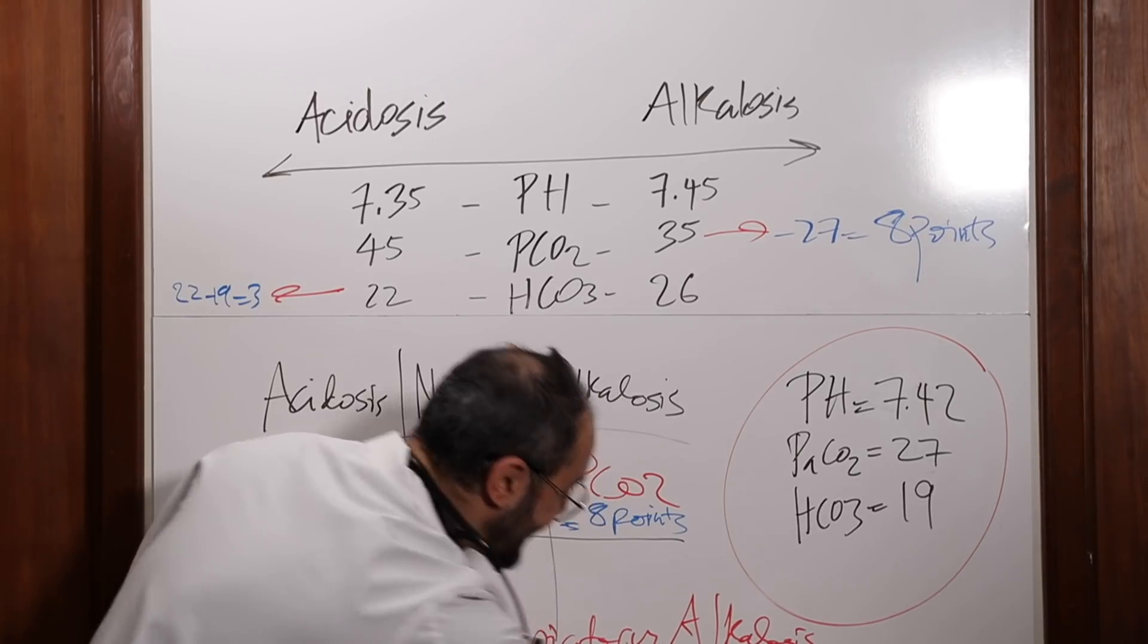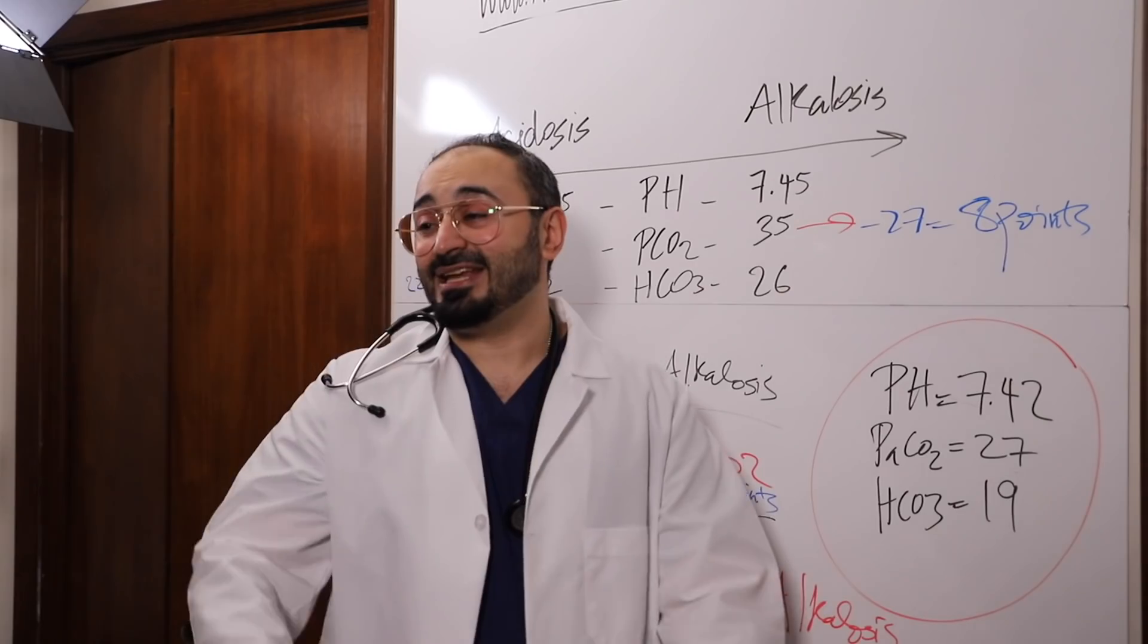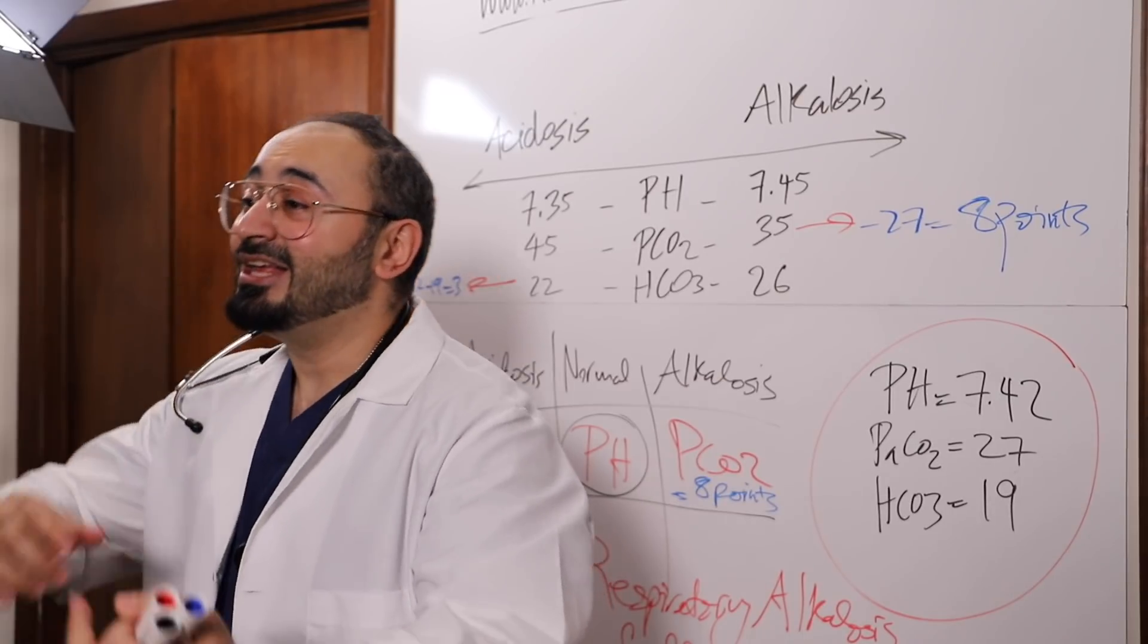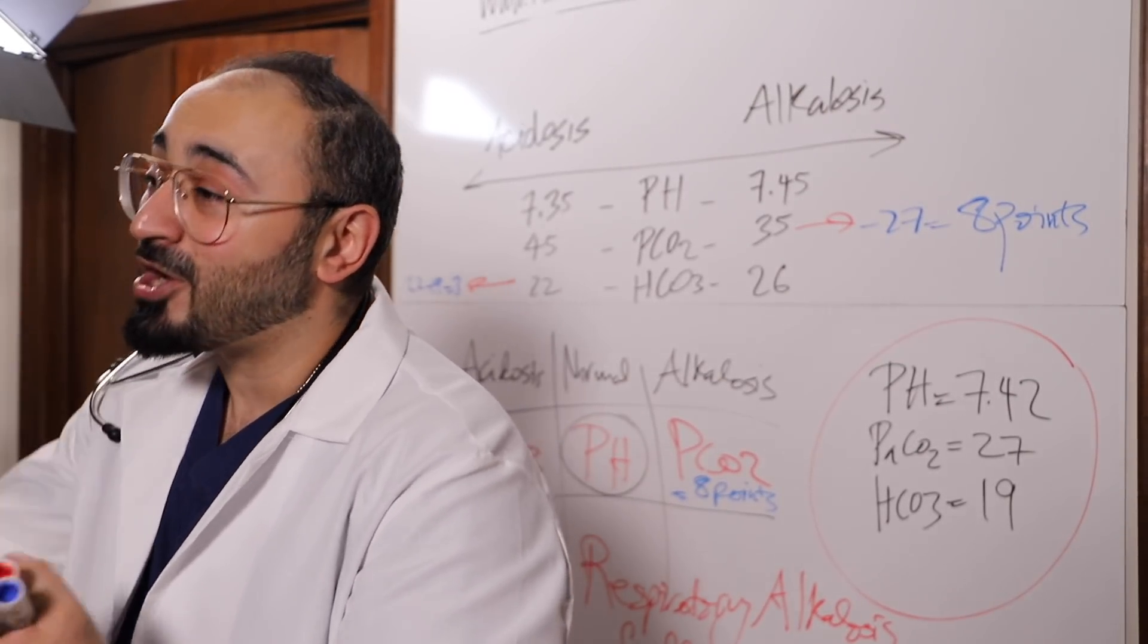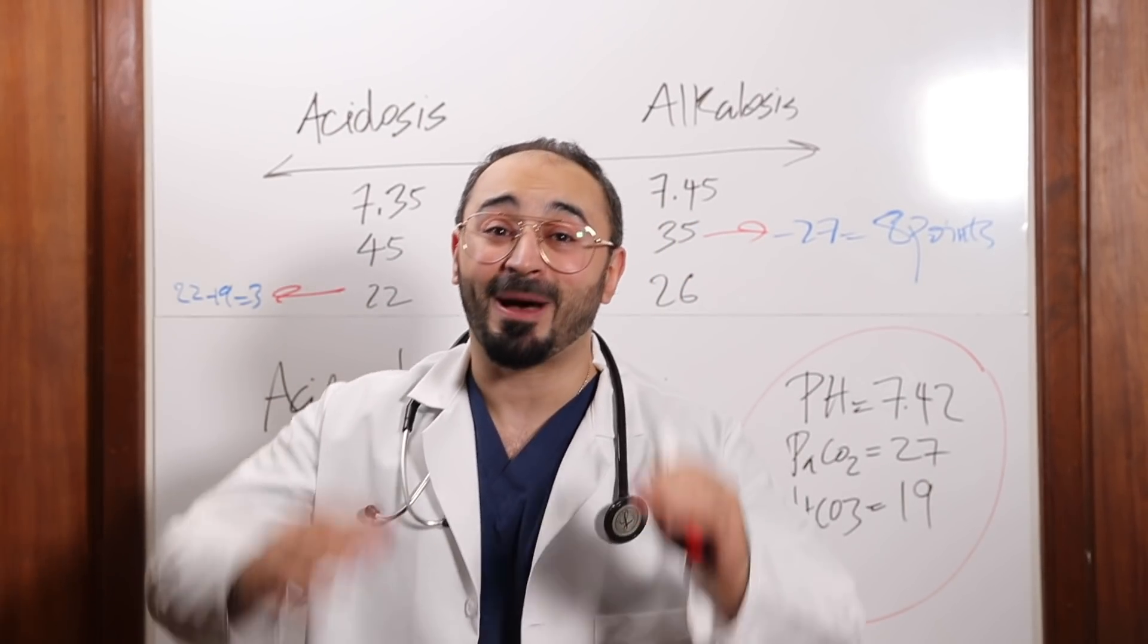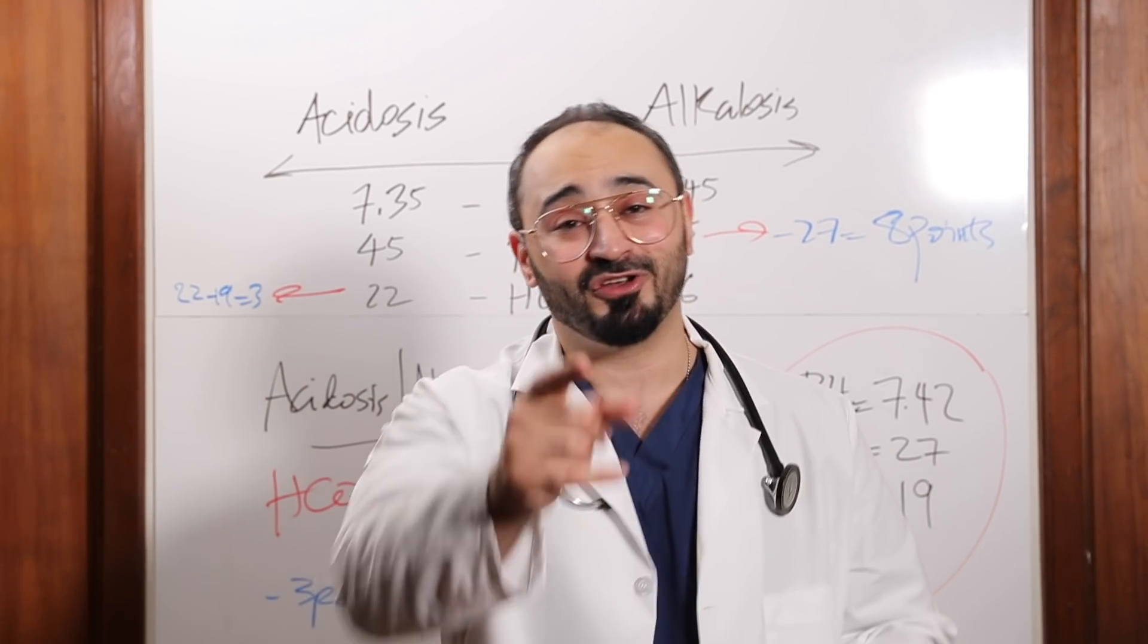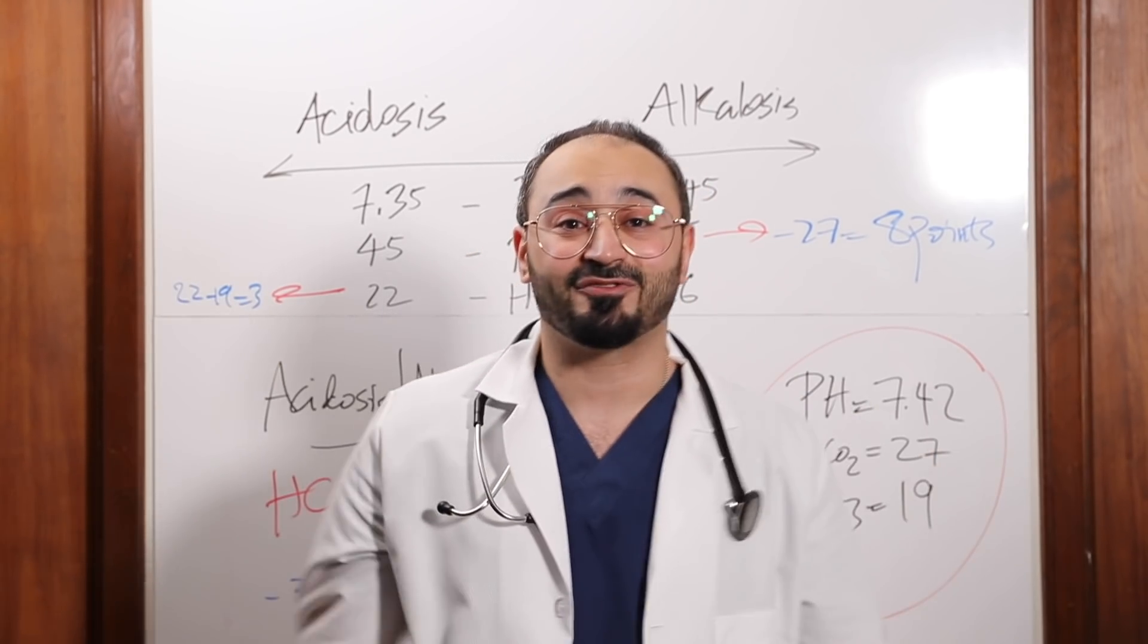I hope you guys can see here in the bottom. So this is your ABGs interpretation. It is that easy. Now you know how to interpret an ABGs. And not just that, you know how to interpret a fully compensated ABGs, partially compensated, and uncompensated ABGs. So this small presentation, you have everything you need to know about ABGs to answer your NCLEX questions right. And trust me, on your NCLEX, you're gonna have at least two questions about ABGs in the first 75 questions.